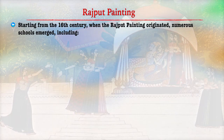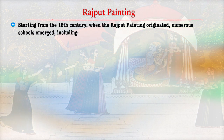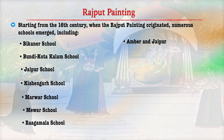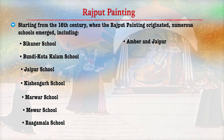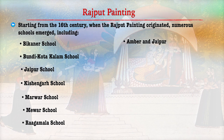The Rajput paintings of India were done on the walls of palaces, inner chambers of forts, and Havelis. The colours used were derived from minerals, plants, precious stones, and gold and silver. Numerous schools emerged starting from the 16th century. Some of the popular schools are the Bikaner school, the Bundi-Kota Kalam school, Jaipur school, Kishangarh school, Marwar and Mewar school, and the Amber and Jaipur school.